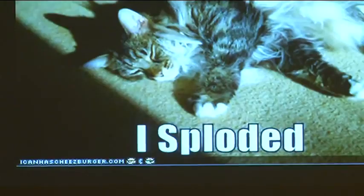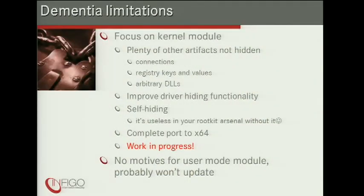Dementia has limitations at the kernel level: it's not currently hiding network connections, registry keys and values, arbitrary files, or arbitrary DLLs. Thread hiding can be improved, driver hiding must definitely be improved. One important missing functionality is self-hiding — without it, the tool is useless in a rootkit arsenal. It also needs to be fully ported to 64-bit without crashes.